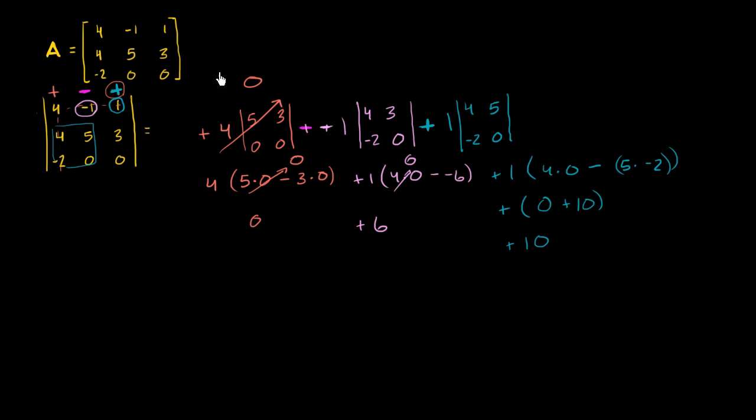So you're left with, let me be clear, this is 0. All of this simplifies to plus 6, and all of this simplifies to plus 10. And so you are left with, if you add these up, 6 plus 10 is equal to 16. So the trick here is to just make sure you remember the checkerboard pattern and you don't mess up with all of the negative numbers and all of the multiplying.